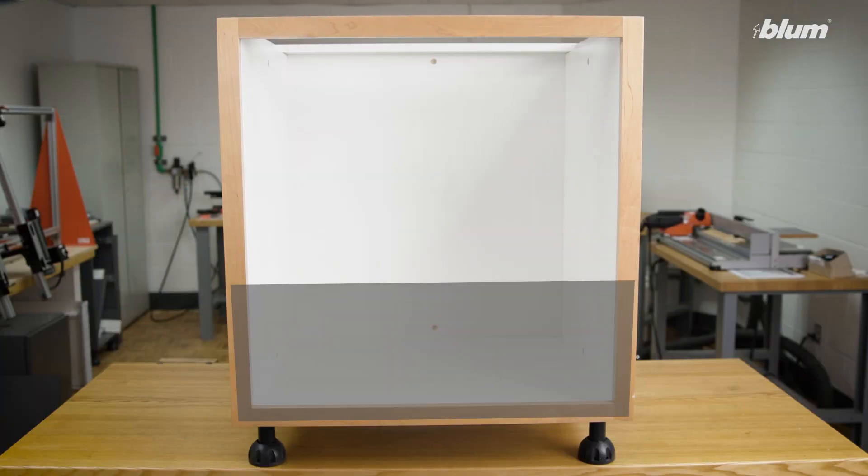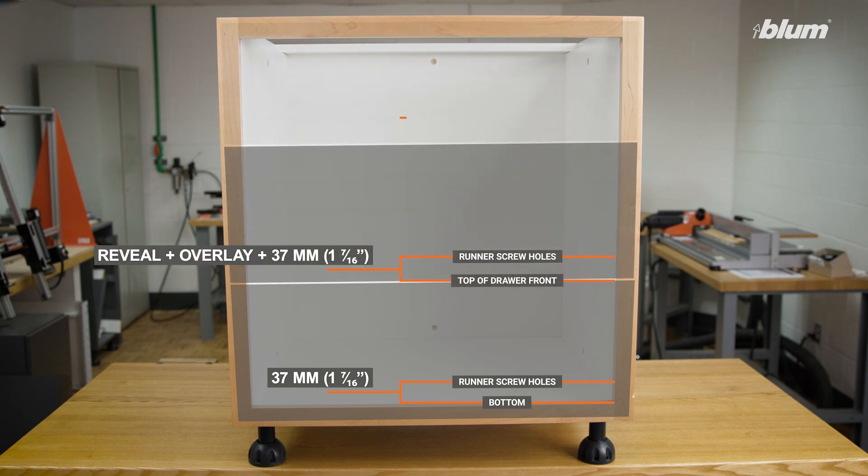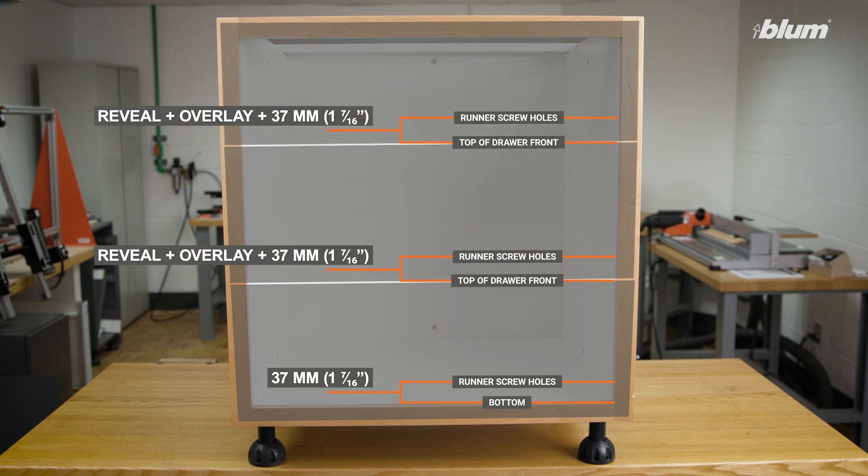Typically, you would start with the bottom drawer. This runner will usually be dimensioned off the bottom of the cabinet or the face frame. Mark the heights for the hole locations. For Tandem Plus Bloom Motion, this is typically 37 millimeters or 1 and 7 sixteenths inches. From there, you will use your drawer heights, overlays, and reveals to calculate where the other runners will be installed.